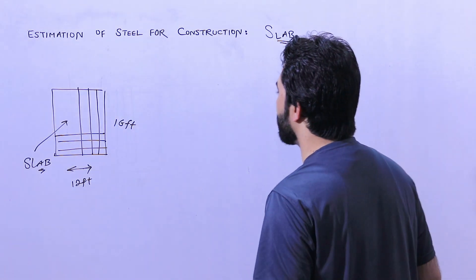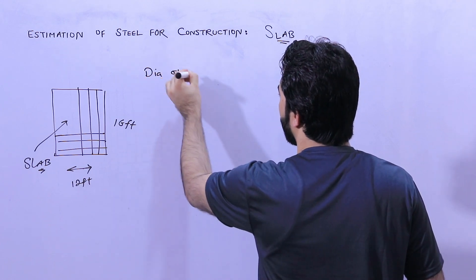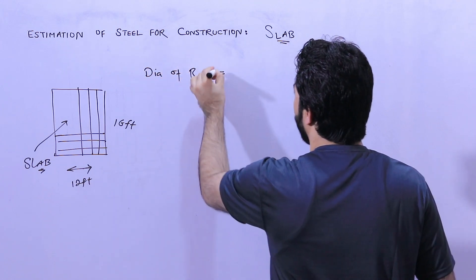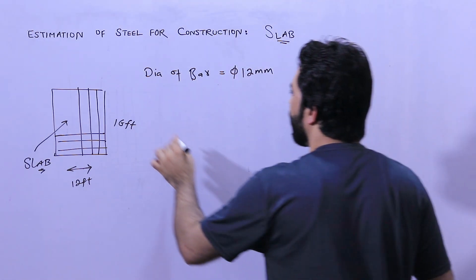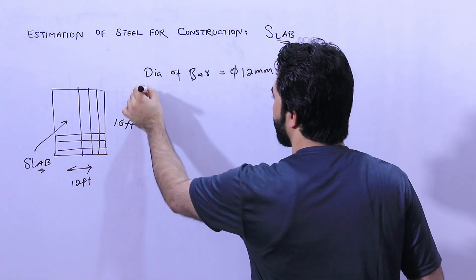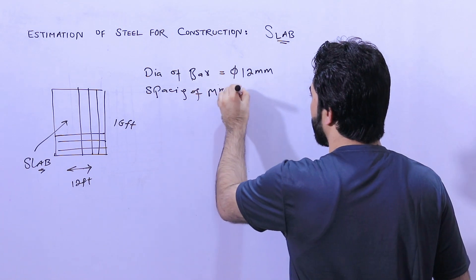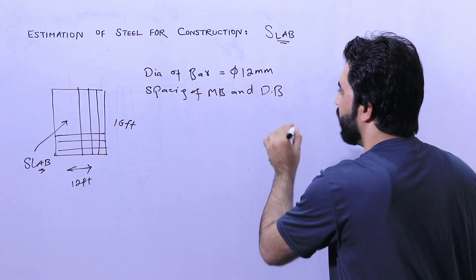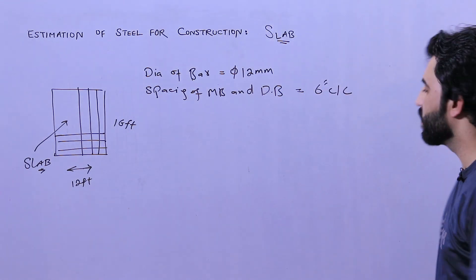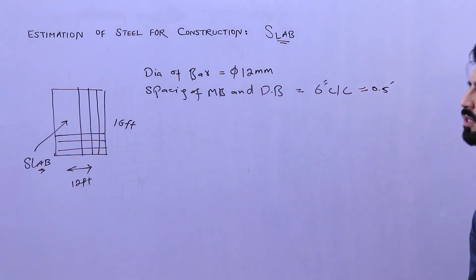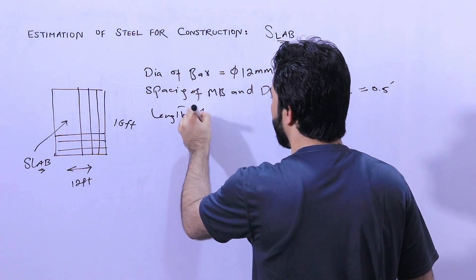First of all, I will guide you for the diameter of steel reinforcement. You should know the diameter of bar, which is minimum 12 millimeters here. Next, remember we also need to know about the spacing of main bars and distribution bars, which is minimum 6 inches center to center, or you can say 0.5 feet.